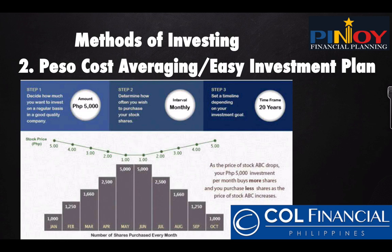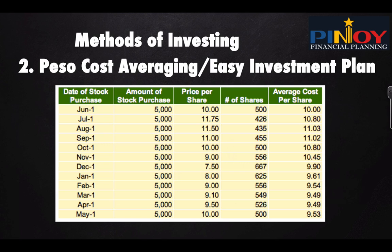The second strategy is peso cost averaging, also called the easy investment plan. Other brokers and banks offer this too. What you do is pick a certain amount to invest every month — let's say 5,000 pesos — and invest it every month regardless of market conditions. You pick one company, say ABC company, and invest 5,000 a month. You do this monthly for 20 years. Every first day of the month you buy, and the stock price varies — so the number of shares you buy changes accordingly.